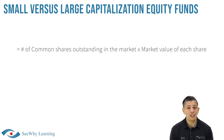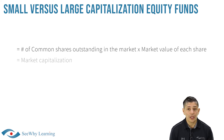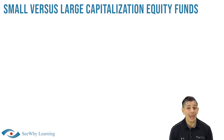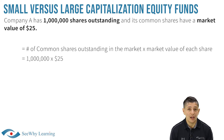Market capitalization is calculated as follows: the number of common shares outstanding in the market, times the market value of each share, equals market capitalization. So let's assume that Company A has 1 million shares outstanding and its common shares have a market value of $25.